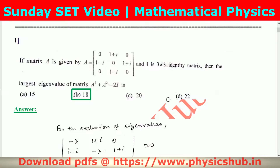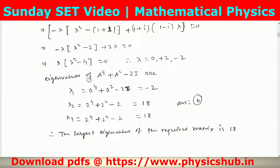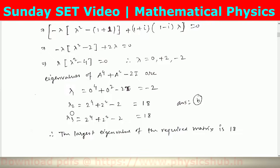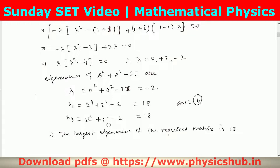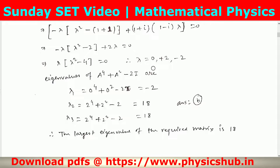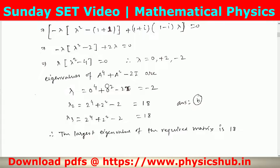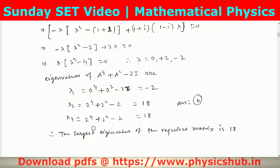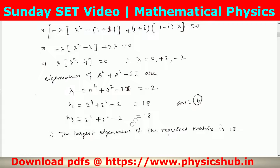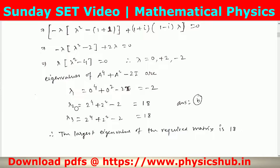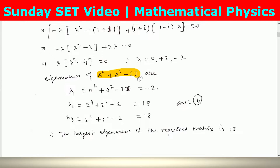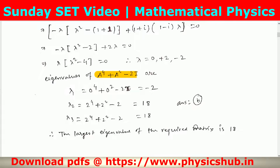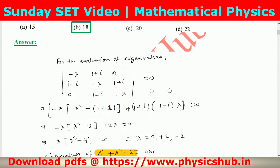To find out the largest eigenvalue of the required matrix, we are putting the lambda values into the expression A⁴ + A² − 2I. By putting λ=0, λ=+2, and λ=−2, we get λ₁=−2, λ₂=18, and λ₃=18. Therefore the largest eigenvalue of this required matrix is 18. So option B is the correct option.